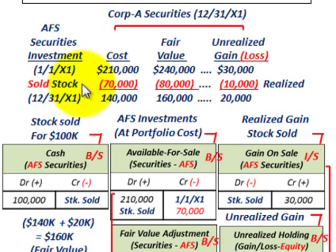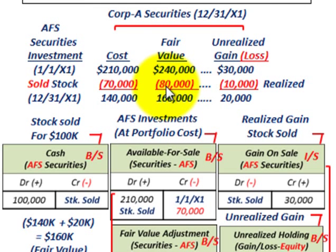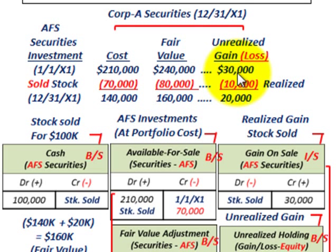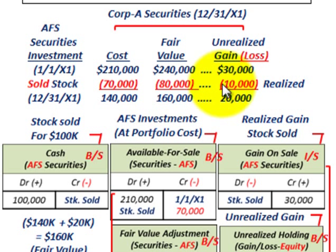During the year, we sold off some of the securities. Their cost was $70,000 and their fair value at that time was $80,000. We're going to remove that $10,000 difference — the unrealized gain — from the portfolio. Since we sold them, those securities are going to be realized and reported in our income statement.